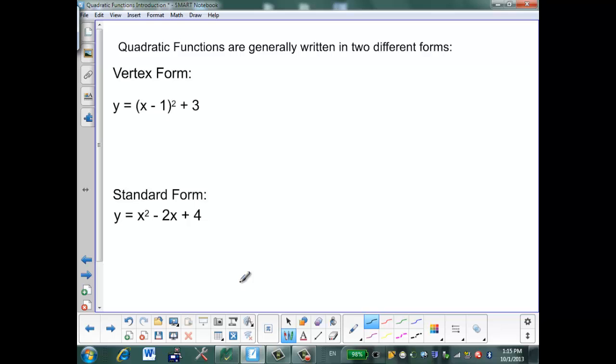If I want to go from vertex form to standard form, I can just do some math and expand my brackets. So x minus 1 squared is the same as x minus 1 times x minus 1. And then I can add the 3 on. Now I'm going to use the distributive property and multiply everything in the first bracket by everything in the second bracket. I get x squared minus 1x minus 1x plus 1 plus 3. And when I collect my like terms, you can see that that gives me the standard form of the equation. So it is possible to go from vertex form and convert your equation until you've got it into standard form.